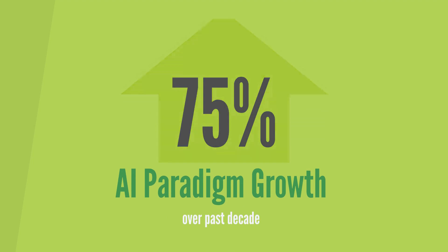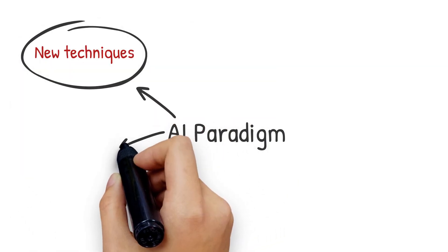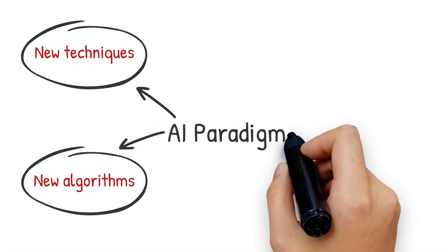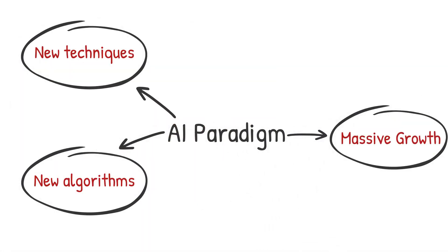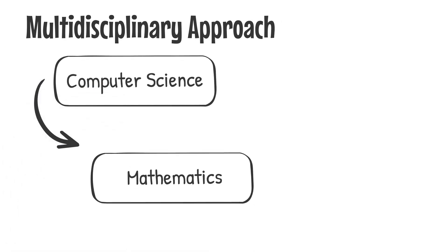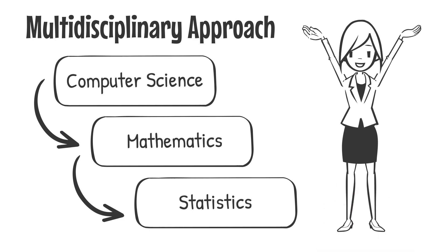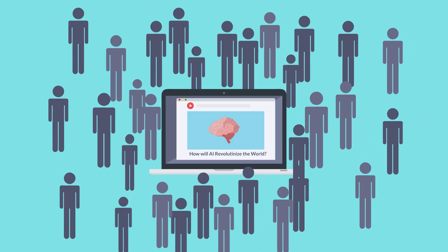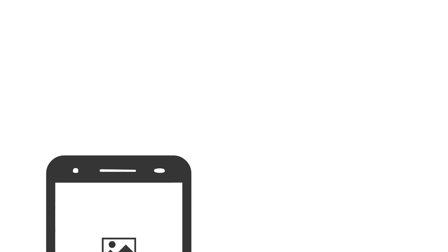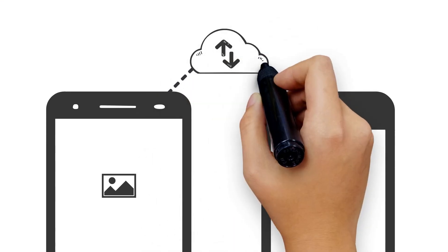The AI paradigm is a rapidly evolving field, with new techniques and algorithms constantly being developed and integrated. It requires a multidisciplinary approach, combining elements of computer science, mathematics, statistics, and other disciplines to achieve the goal of creating intelligent machines that can perform a wide range of tasks.